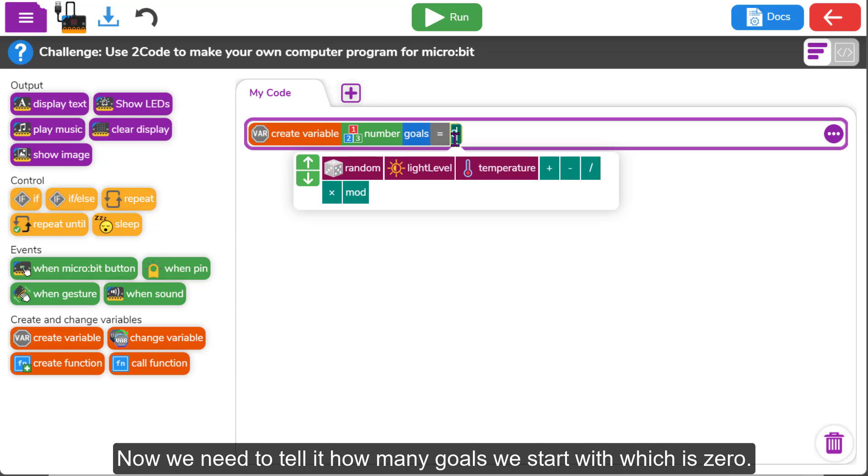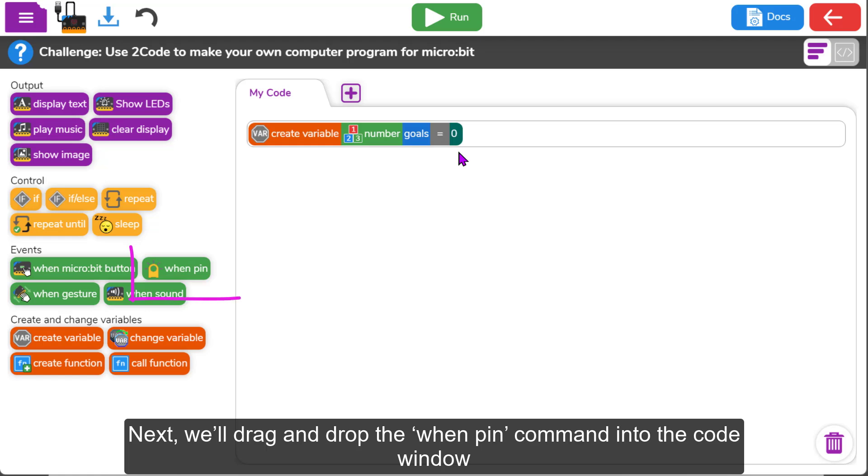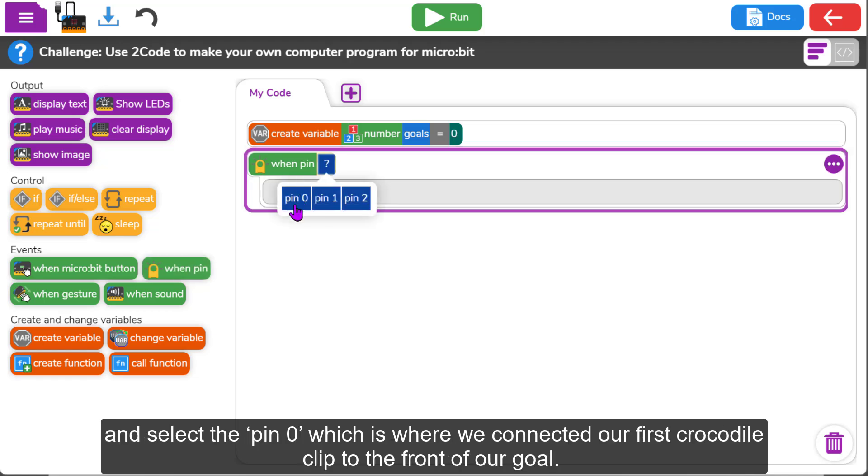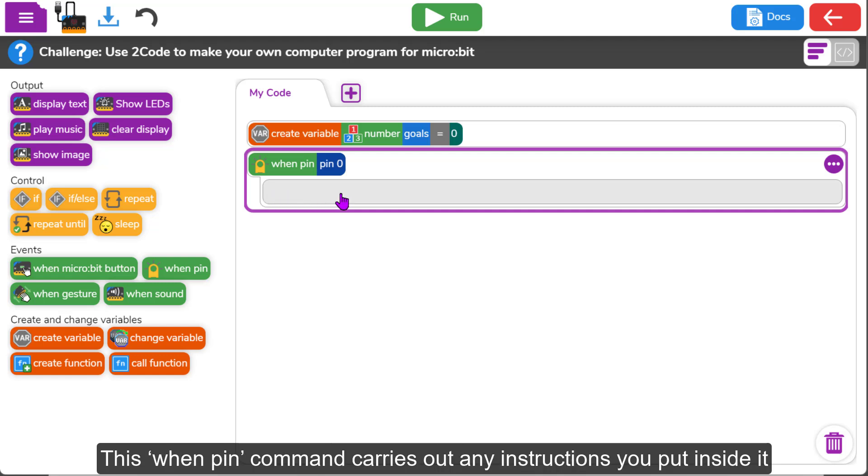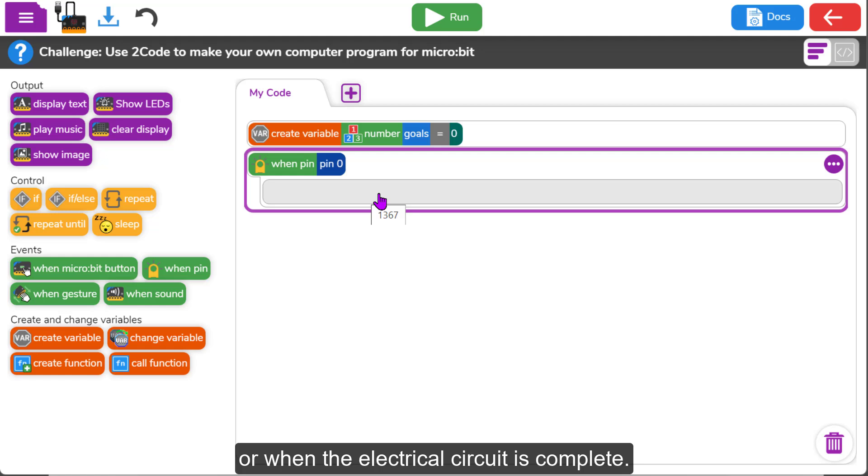So let's click where it says my number 1 and call it goals. Now we need to tell it how many goals we start with which is zero. So when we press the reset button on the back of our microbit and the program restarts, the goal count will be set back to zero. Next, we'll drag and drop the when pin command into the code window and select the pin zero, which is where we connected our first crocodile clip to the front of our goal. This when pin command carries out any instructions you put inside it when the microbit senses that an electrical connection has been made between the two sections of foil on our goal or when the electrical circuit is complete.